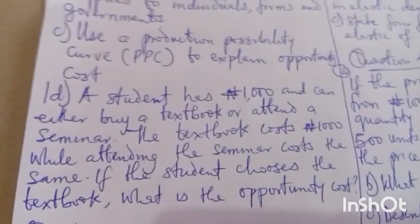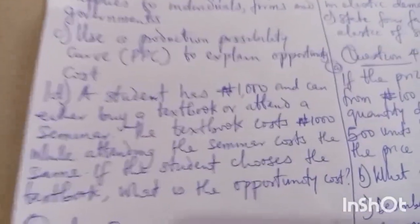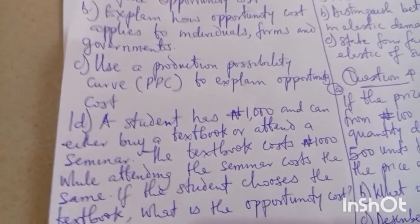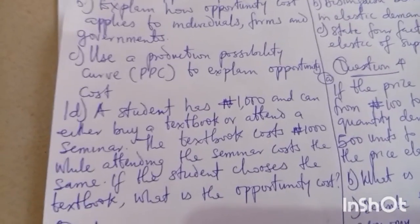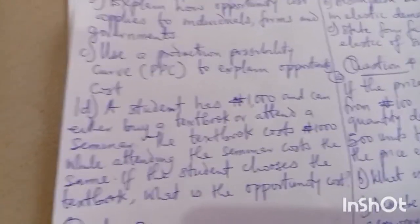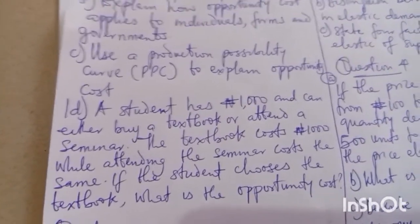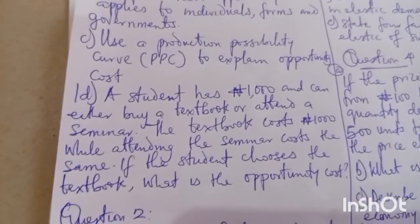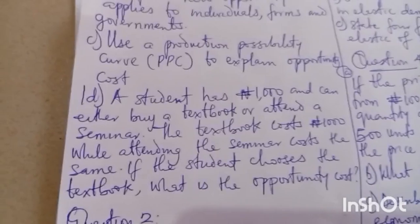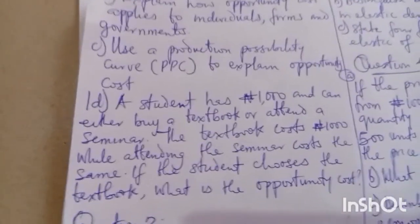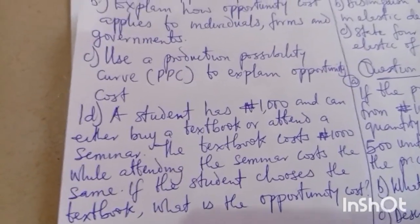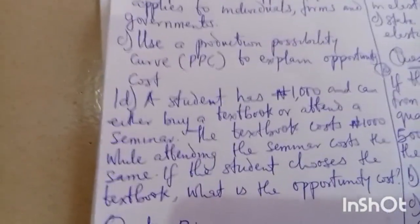Question one D: a student has 1000 naira and can either buy a textbook or attend a seminar — both cost 1000 naira. If the student chooses the textbook, what is the opportunity cost? Put your answer in the comment box — I will not answer that one. I think I have explained well enough, so put your answer in the comment box so we know we are doing this together. Now I am going to question two.